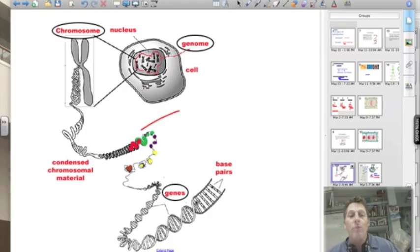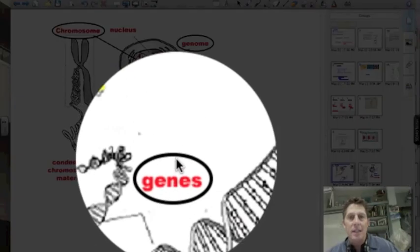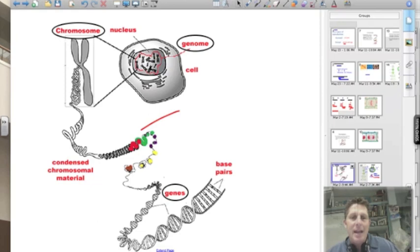Think one gene, one protein. So your genes dictate characteristics about you. If we take this DNA and wrap it up, coil it up, wrap it around these proteins, we're going to end up with a chromosome, a packet of DNA. So chromosomes are just DNA all wrapped up.